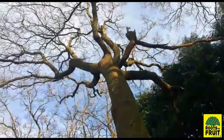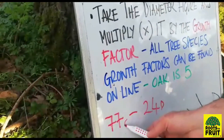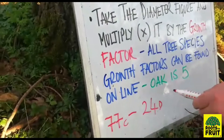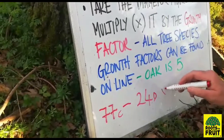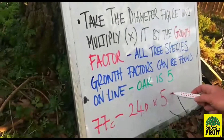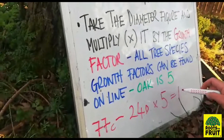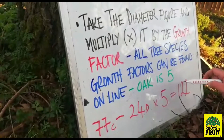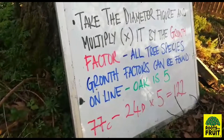So I'll put it down on the whiteboard: we have a circumference of 77, a diameter of 24, we timesed it by the growth factor of five, and we ended up with a 122-year-old tree. And that is a really simple way of determining the age of a tree without cutting it or harming it in any way.